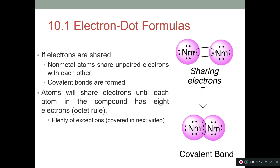In this video, we're going to start talking about electron dot structures. This is for covalent compounds. A covalent compound is when we take an unpaired electron from one non-metal and an unpaired electron from another non-metal. We start sharing them so that both of them end up with a full octet.